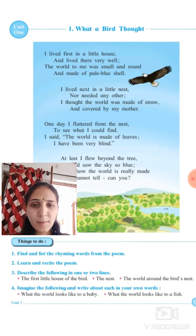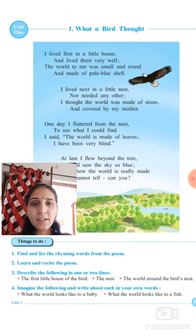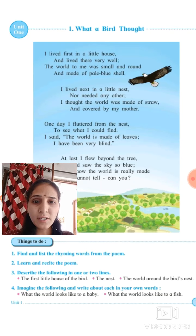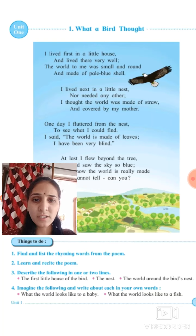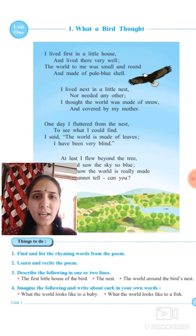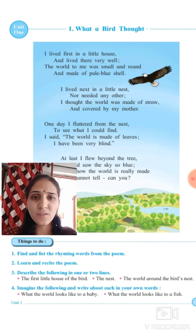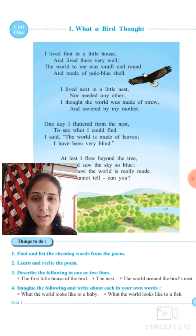And it was made of pale blue shell. Pale blue shell — it's the inside cover of an egg. Egg ke andar ka jo cover hota hai, usko kehte hain pale blue shell. It means the bird was first born, created as a baby, inside the egg. Bird ka jo pehla ghar tha, means uska jo pehla ghar tha, that was inside the egg. Egg ke andar sabse pehle birds woh aaya tha. So, bird's first little house is very little, small and round, and it is covered by pale blue shell.